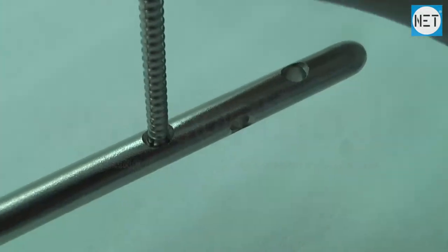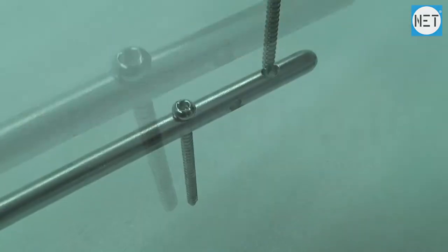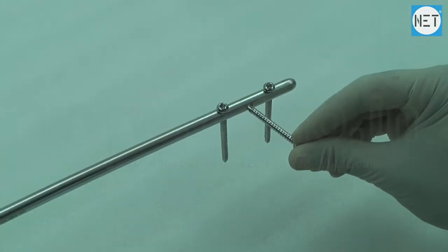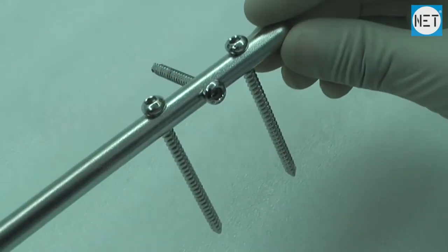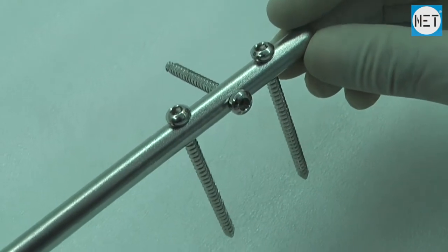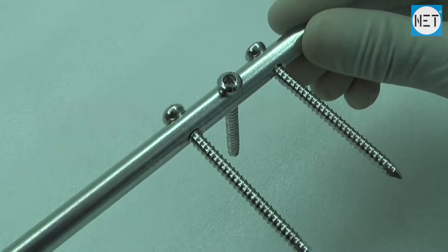All three distal holes allow for 4.5mm locking bolts. The first and third holes from the bottom are directed lateral to medial, and the second hole is directed anterior and posterior.